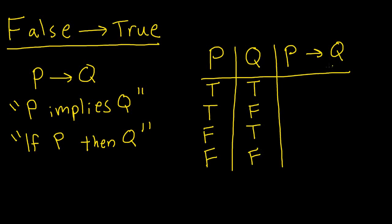And P implies Q: if P and Q are both true, then P implies Q is true. If P is true and Q is false, then P implies Q is false. If P is false and Q is true, then P implies Q is true. And if P is false and Q is false, then P implies Q is true.